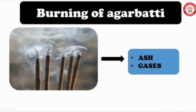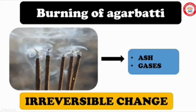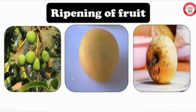Burning of agarbatti: here we are getting new products — ash and gas. We cannot get back the agarbatti again. So it is an example for irreversible change. And ripening of fruit is again an example for irreversible change.